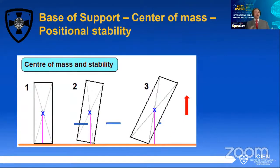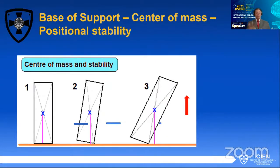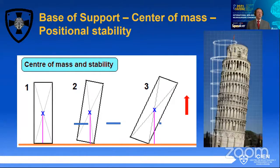Another important concept regarding positional stability is the base of support. For an object to stay upright, the center of gravity must stay over the base of support. The further away you move from the base of support, the more unstable it becomes — up to a point where you need an external force to maintain the object upright. This is like the leaning Tower of Pisa — it hasn't fallen because the center of gravity is still right under the base of support, representing an unstable but sustained system.